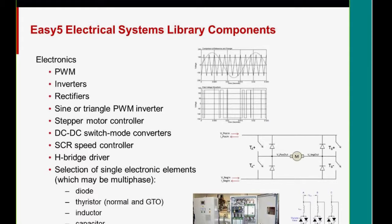As far as electronics, there's a good selection of general purpose components for modeling electronics. We have pulse width modulator inverters for changing AC to DC current, rectifiers for DC to AC. There's a sine or triangle pulse width modulator inverters. There are stepper motors, controllers. DC to DC switch mode converters like buck or buck boost, SCRs and GTOs, and H-bridge driver for motors. And there's a number of primitive components for modeling electronics that include diodes, a thyristor, inductor, capacitor, resistor. And if I get a chance, I'll show you some of those.